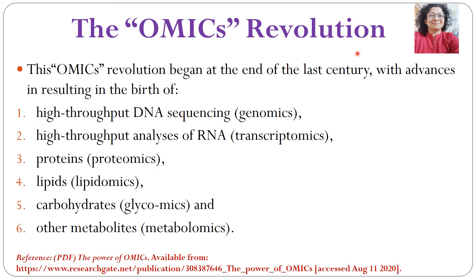The omics revolution began at the end of this century, resulting in the birth of several branches. High-throughput DNA sequencing led to the evolution of genomics. High-throughput analysis of RNA led to the birth of transcriptomics. Protein classification and profiling led to proteomics. Similarly, lipid profiling led to lipidomics, study of carbohydrates led to glycomics, and various other metabolites led to the birth of metabolomics. All these combined constitute the omics revolution.